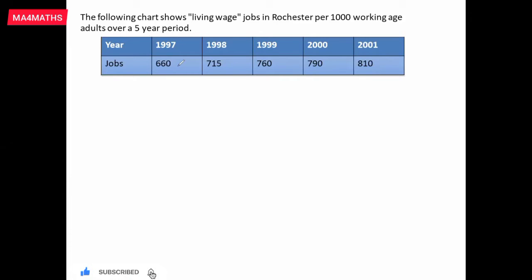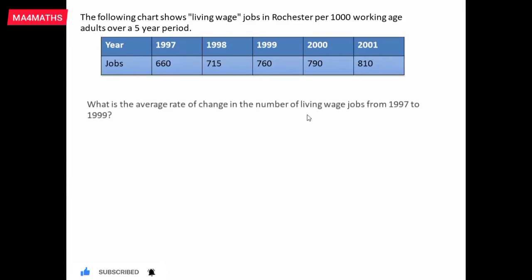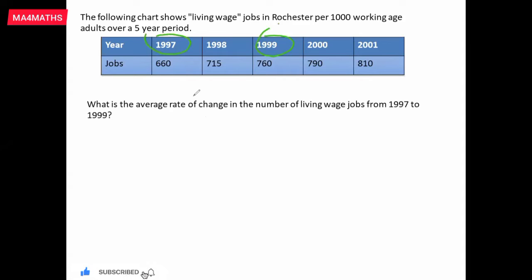So what we need to find — we need to find the average. What is the average rate of change in the number of living wage jobs from 1997 to 1999? We need to find the difference, or the average rate of change in jobs per year.